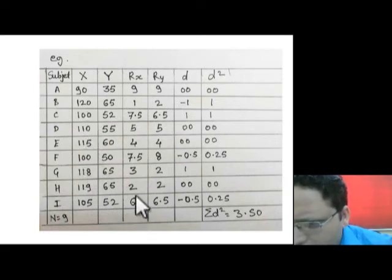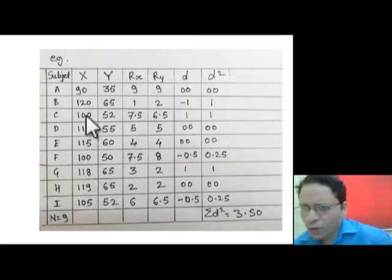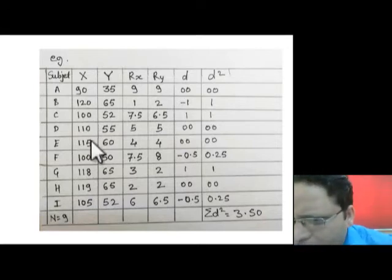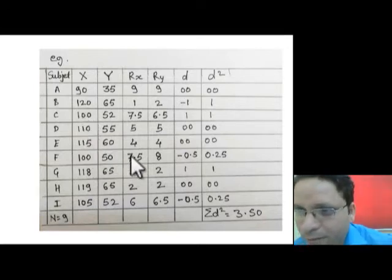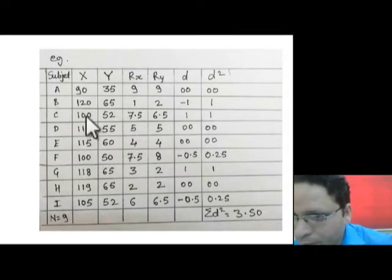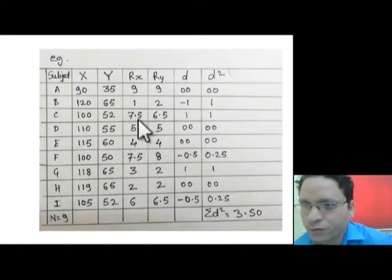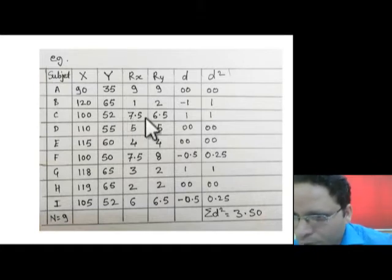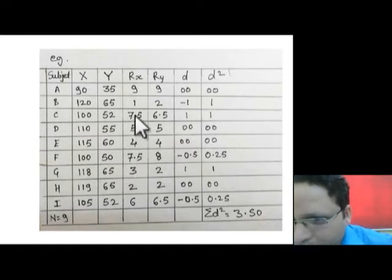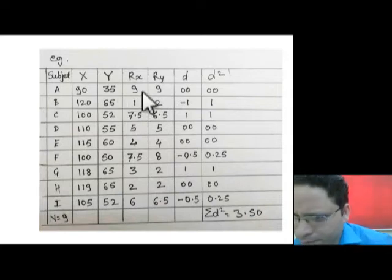After rank 6, the next ranks would be 7 and 8, but since 100 appears twice we cannot write 7 and 8 separately. So we calculate (7 + 8) / 2 = 15 / 2 = 7.5. We write 7.5 for both entries. After 100, the next highest number is 90, which gets rank 9. So we have ranks 1 through 9.